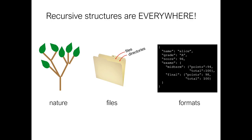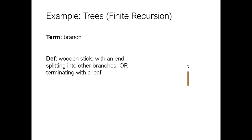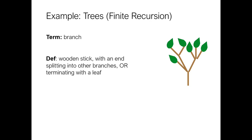When you start looking, you're going to start to see recursive structures everywhere — in nature, in file structures, in file formats. This is a definition of a tree as written by a computer scientist. A branch is a wooden stick with an end splitting into other branches or terminating with a leaf. Here's my first stick — it has three sticks on the end of it, and they can either terminate with a leaf or have other branches. I've got two cases: a base case terminating with a leaf that ends the recursion, and a recursive case where we keep getting larger and larger trees.